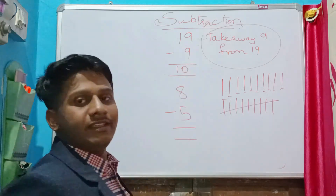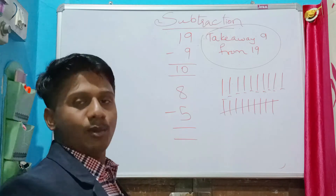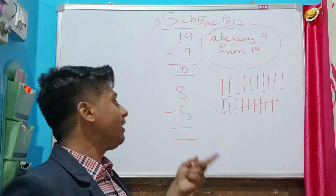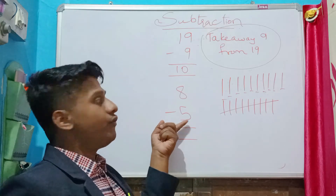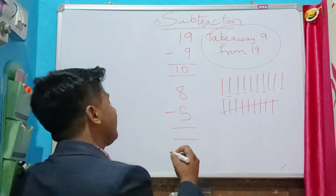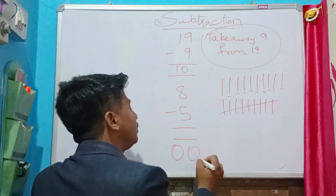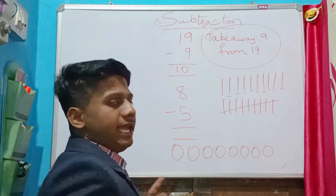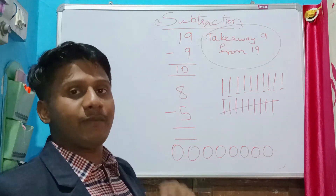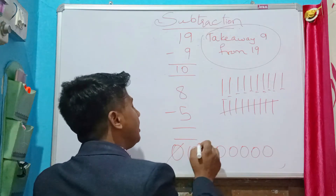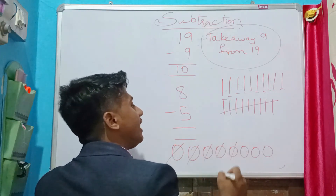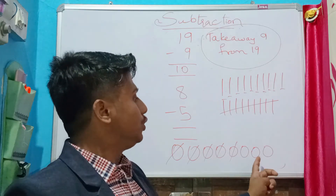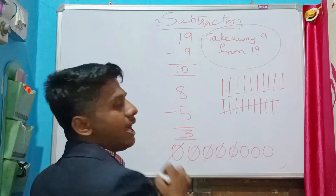Next problem: 8 minus 5. They can also say 'take away 5 from 8.' Consider eight X marks: one, two, three, four, five, six, seven, eight. You used five X marks, so cancel five: one, two, three, four, five. Five cancelled — remaining: one, two, three. The answer is 3.